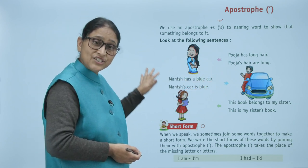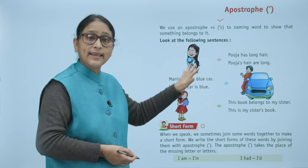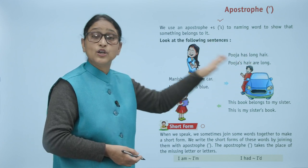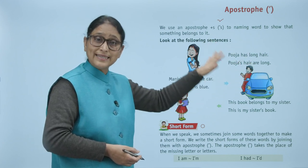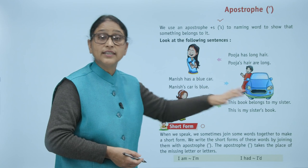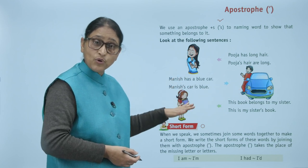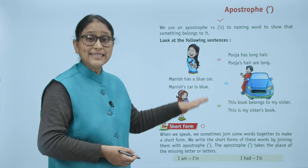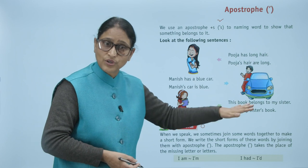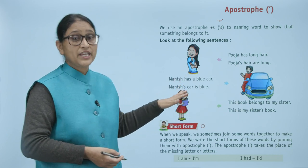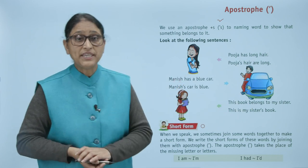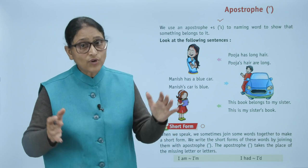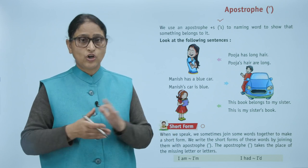Look at the following sentences: 'Manish has a blue car' — Manish's car is blue. 'Puja has long hair' — Puja's hair is long. 'This book belongs to my sister' — this is my sister's book.